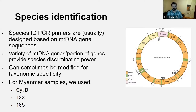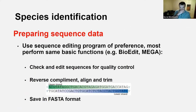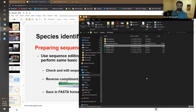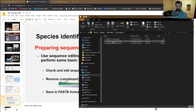My approach — and the labs I've worked in — is to use multiple markers. For the Myanmar samples, we used a cytochrome b marker, the 12S, and 16S. We run all three for every sample and look for congruence across them. We do a PCR with a set of primers, then use a sequencing editing program to look at and edit those sequences for quality control. We do a reverse complement — checking our forward and reverse strands against each other — then save in FASTA format.